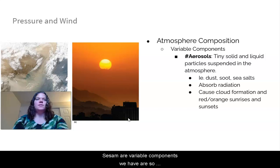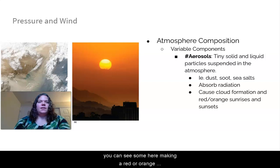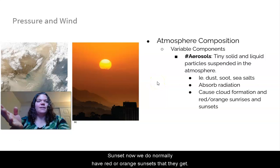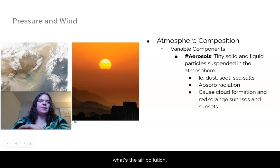Some more variable components: we have aerosols. These are tiny solid and liquid particles that are suspended in the atmosphere. They include dust, soot, and sea salts. You can see some here making a red or orange sunset. They get a little bit more brilliant when we have more aerosols. And these also absorb radiation. You can see here a big dust storm, lots of air pollution that's in Asia.